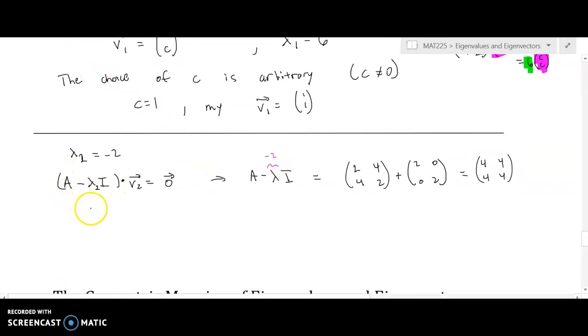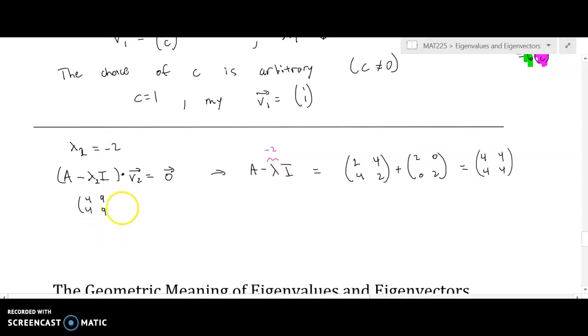So A minus lambda I we have as [[4, 4], [4, 4]]. And now what we need to do is we need to compute the components of V2. And to do that, once again, we'll see that this is just some x and some y equals [0, 0].